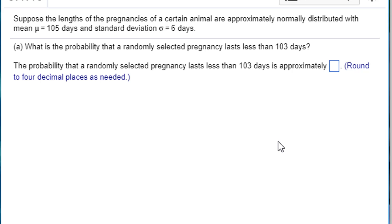Suppose the lengths of the pregnancies of a certain animal are approximately normally distributed with mean of 105 days and standard deviation of six days. What's the probability a randomly selected pregnancy lasts less than 103 days?